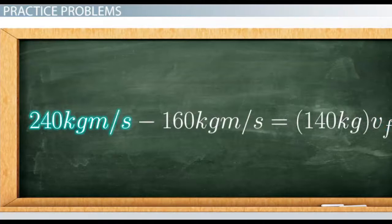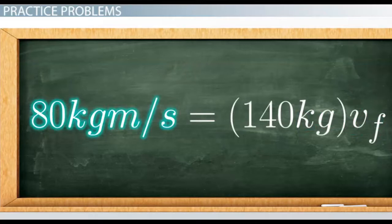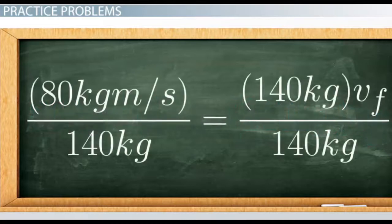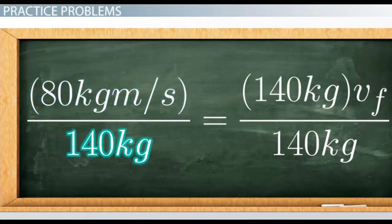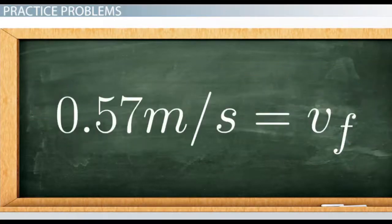240 kg·m/s minus 160 kg·m/s equals 140 kg times VF. 80 kg·m/s equals 140 kg times VF. Dividing both sides by 140 kg gives 0.57 meters per second equals VF.